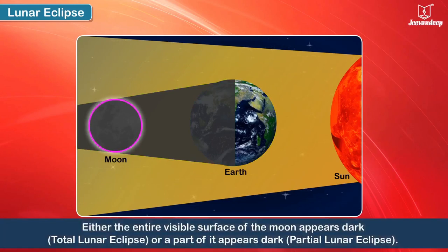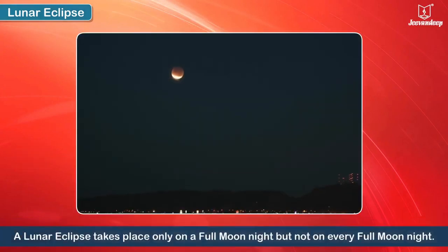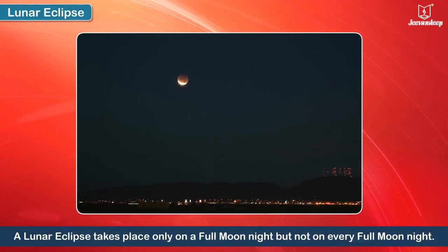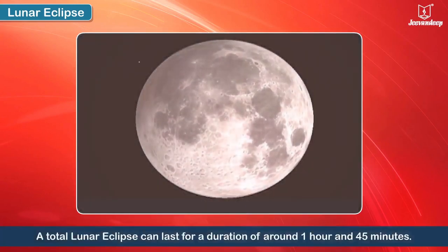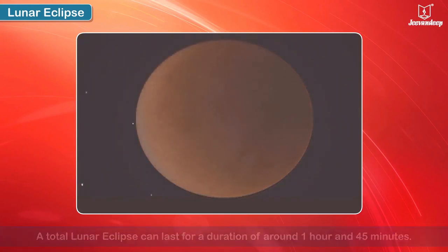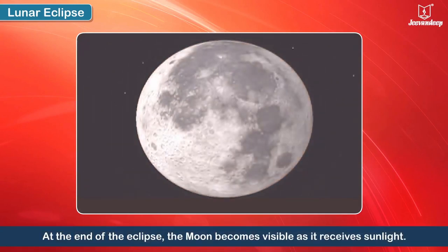Consequently, either the entire visible surface of the Moon appears dark — that is, a total lunar eclipse — or a part of it appears dark, which is a partial lunar eclipse. A lunar eclipse takes place only on a full Moon night, but not on every full Moon night. A total lunar eclipse can last for a duration of around 1 hour and 45 minutes. At the end of the eclipse, the Moon becomes visible as it receives sunlight.